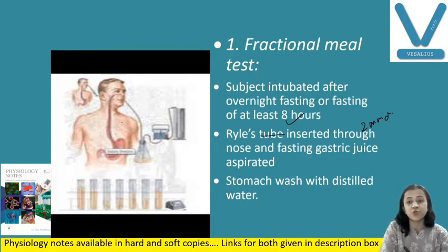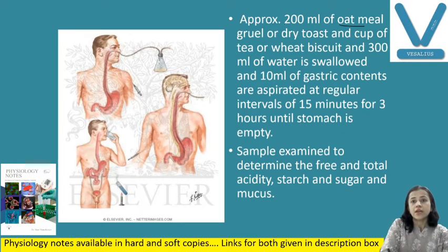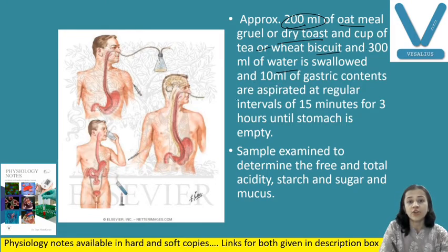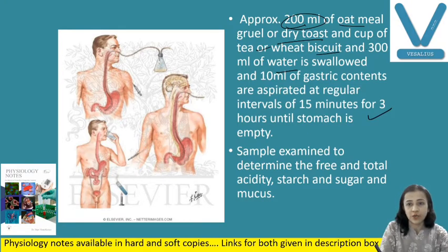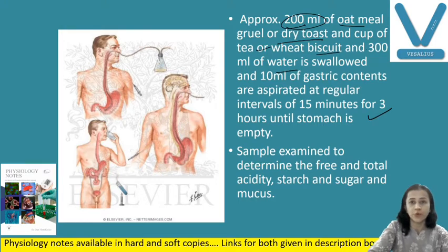Fasting gastric juice is aspirated, and after aspiration the stomach is washed with distilled water. After that, we have to give oatmeal gruel — that is a standard test meal of 200 ml of oatmeal gruel, or dry toast and cup of tea, or wheat biscuit and 300 ml of water. That is allowed to swallow. And 10 ml of gastric contents are aspirated at regular intervals of 15 minutes. This is done for 3 hours, until the stomach is completely empty. Each sample is examined to determine free and total acidity, as well as presence of starch, sugar, and mucus.